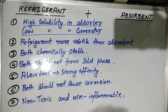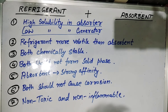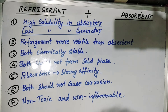The fifth point is that the absorbent should have strong affinity, as discussed earlier. The sixth point is that both should not cause corrosion, as it will affect the efficiency of the system. And the seventh and last point is that both should not be toxic and should not be inflammable.